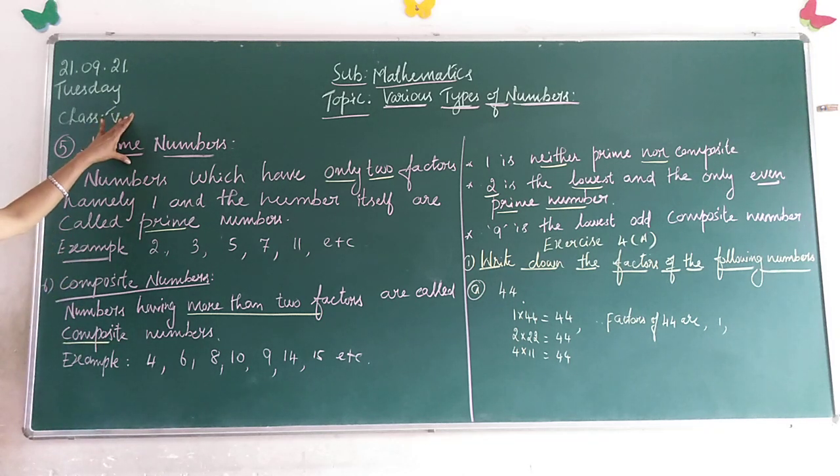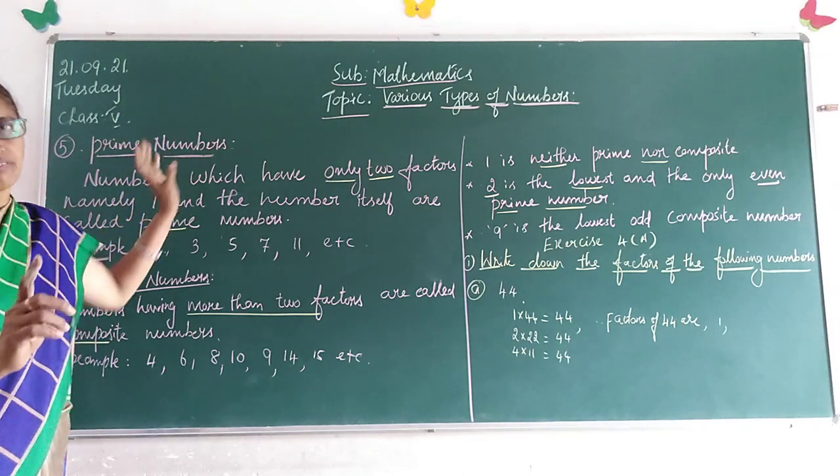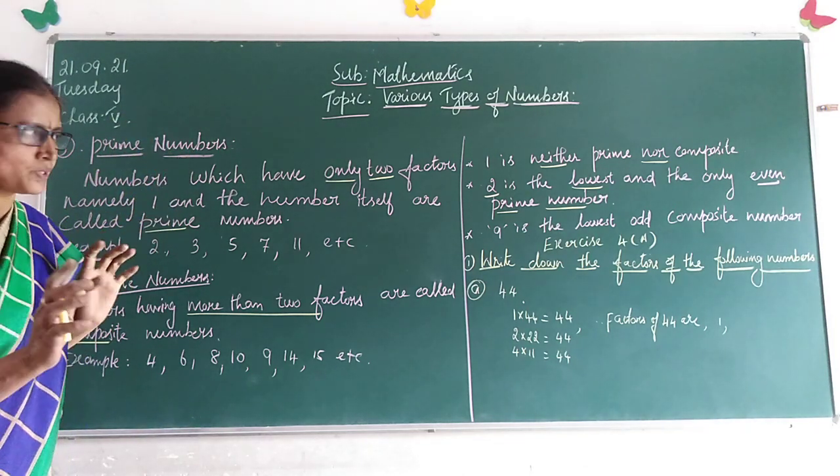What are called prime numbers, children? Numbers which have only two factors, namely 1 and itself, are called prime numbers.